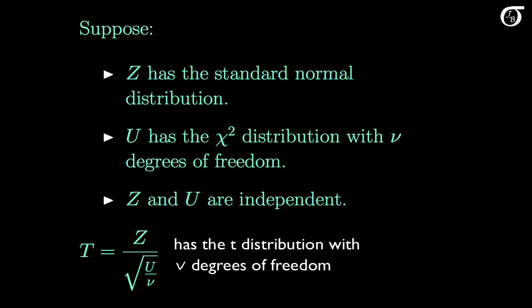Now this might all sound a little abstract, and you might wonder when we would ever wish to divide a standard normal random variable by the square root of an independent chi-square random variable over its degrees of freedom. But this actually has some common and important practical applications for us.